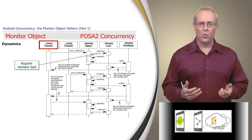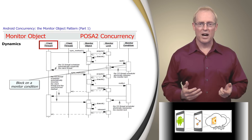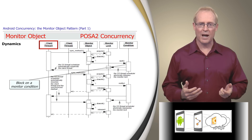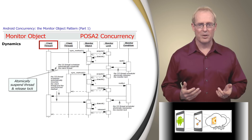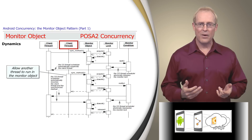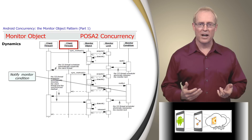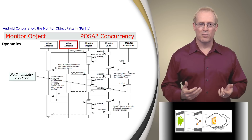If a synchronized method must block or otherwise can't make immediate progress, it can wait on one of its monitor conditions, causing it to leave the monitor object temporarily. The monitor object implementation is responsible for ensuring the object is in a stable state before switching to another thread. When a synchronized method leaves the monitor object, the client's thread is suspended on that monitor condition and the monitor lock is released atomically. For example, if thread T1 calls a synchronized take method on an empty LinkedBlockingQueue, it will wait on the not empty condition. A synchronized method can notify a monitor condition, which awakens a thread suspended on that condition. For example, if thread T2 calls a synchronized put method to add a new element, it will notify the not empty condition object, which may awaken thread T1.